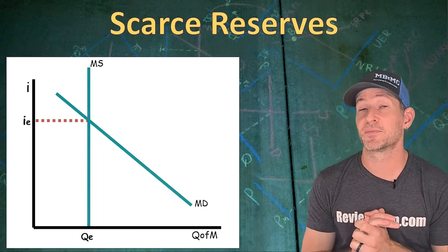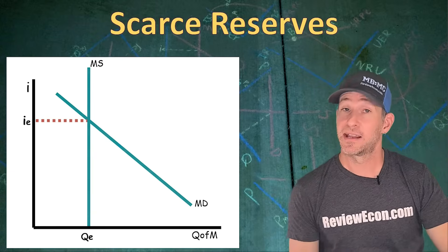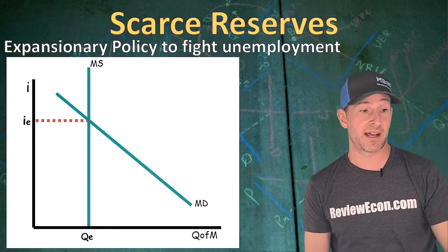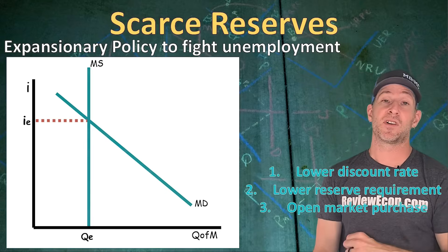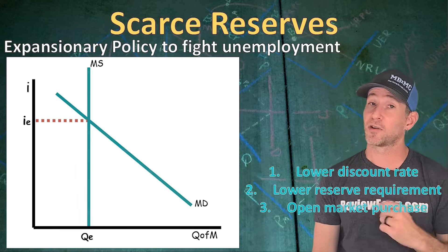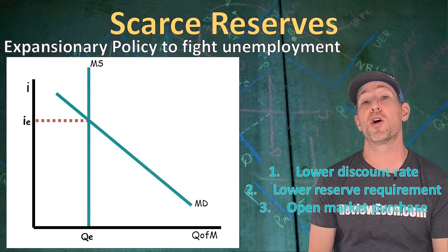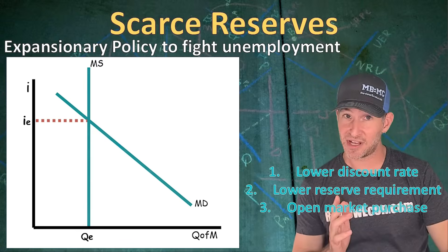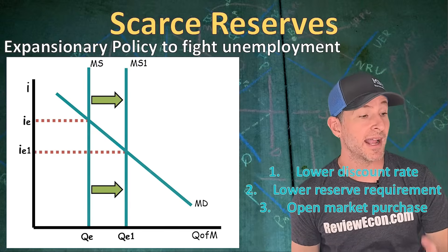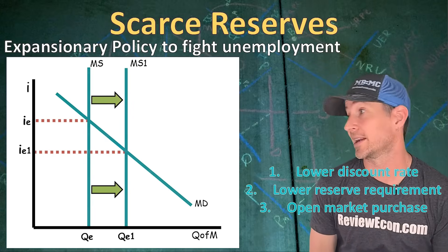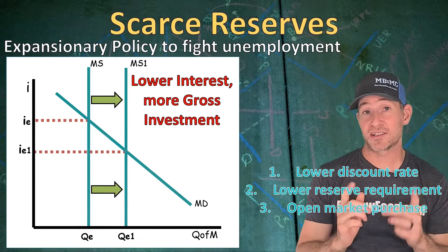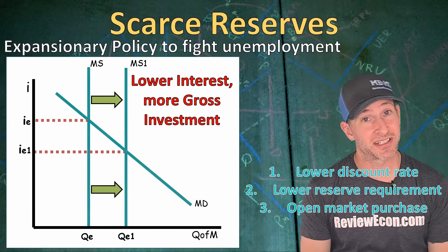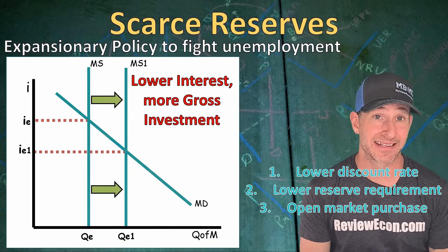If the central bank is looking to fight unemployment, it will use expansionary monetary policy to increase the money supply. That involves lowering the discount rate, lowering the reserve requirement, or making an open market purchase of government bonds. Any of those actions increase the money supply, driving down the nominal interest rate in the money market. That lower interest rate leads to higher investment and an increase in aggregate demand in the AS-AD model.